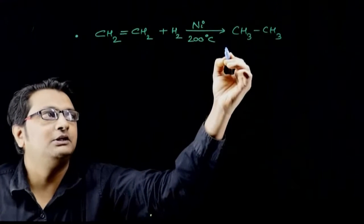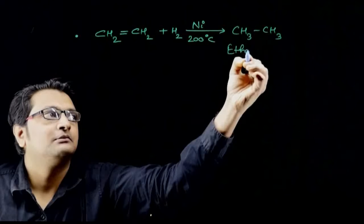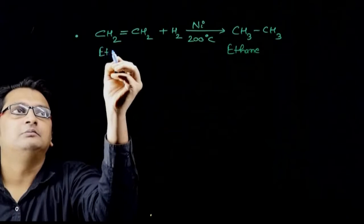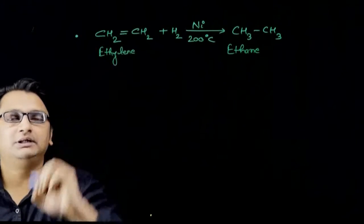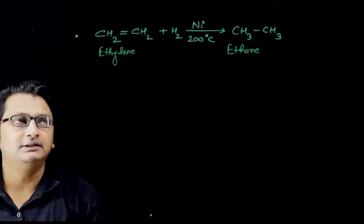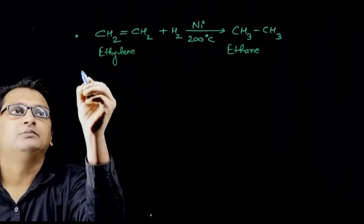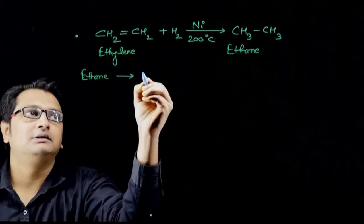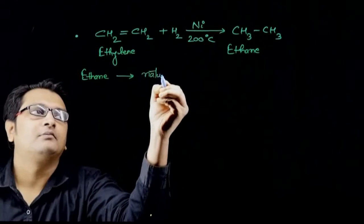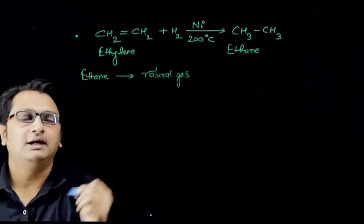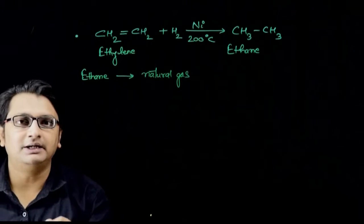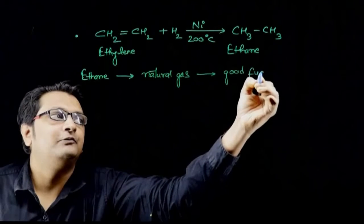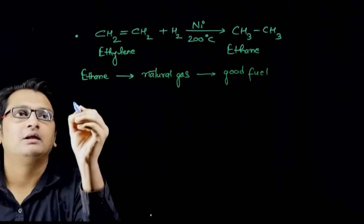a saturated hydrocarbon named ethane. So from unsaturated hydrocarbon ethylene, ethane is formed. This ethane is an important constituent of natural gas and is thus volatile and can be used as a good fuel for us.